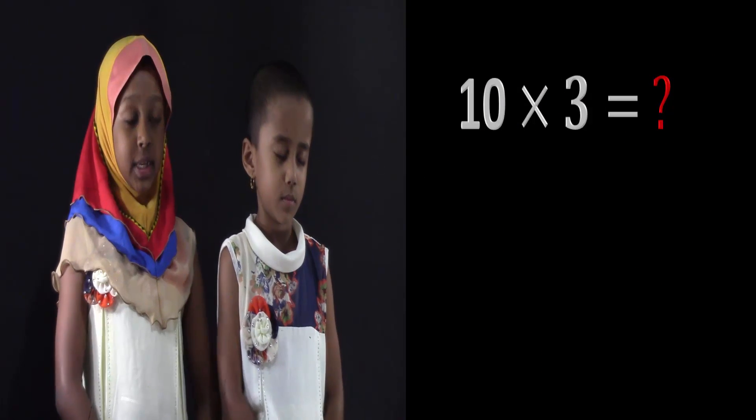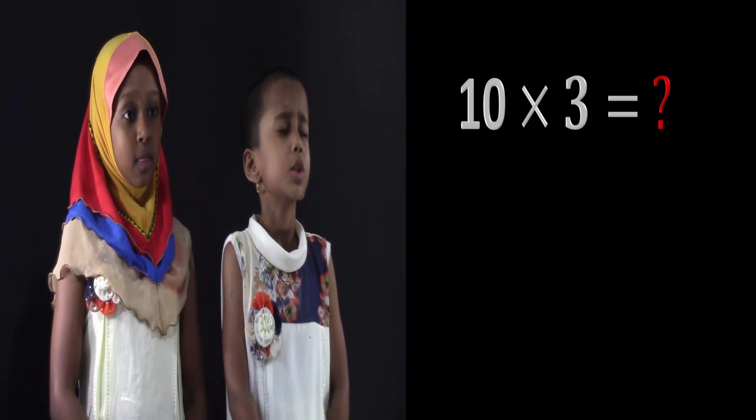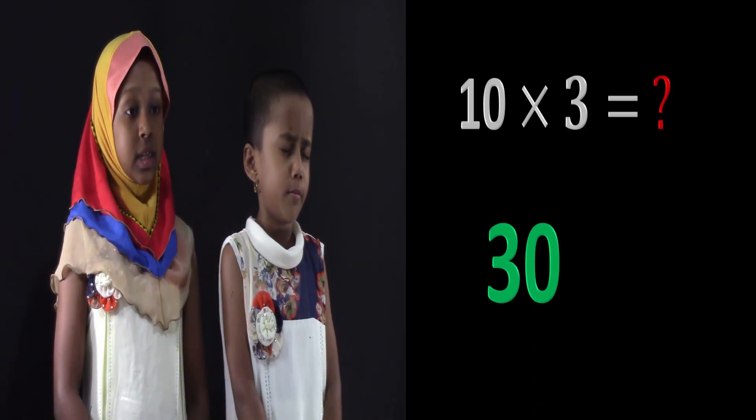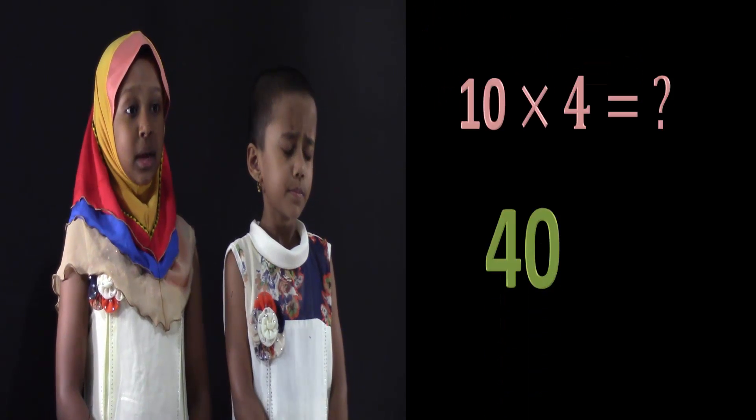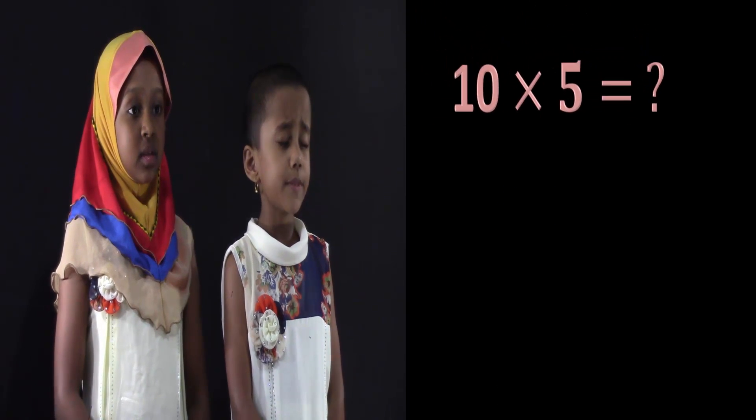What's 10 times 3? 10 times 3 is 30. What's 10 times 4? 10 times 4 is 40. What's 10 times 9? 10 times 9 is 90. What's 10 times 5? 10 times 5 is 50.